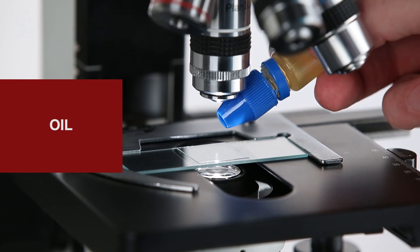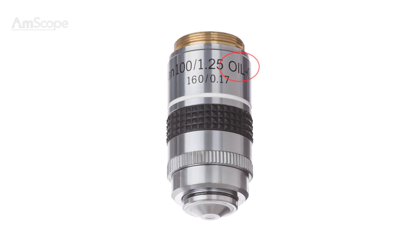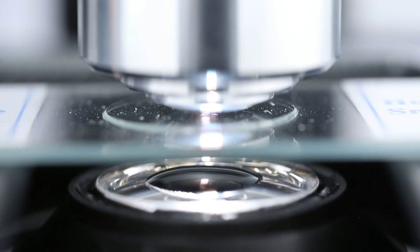When working at high magnification, you'll likely be using an oil objective lens and an oil condenser. Before using an oil condenser, apply a drop of oil to the condenser's lens. Once the condenser is installed, raise it until the oil makes contact with the bottom of the slide.